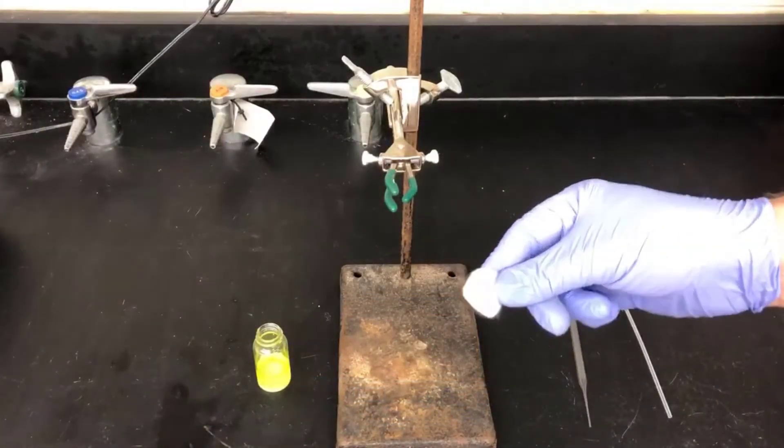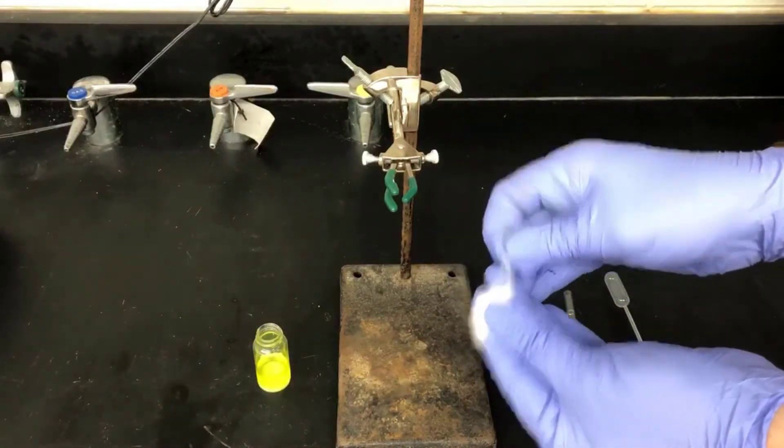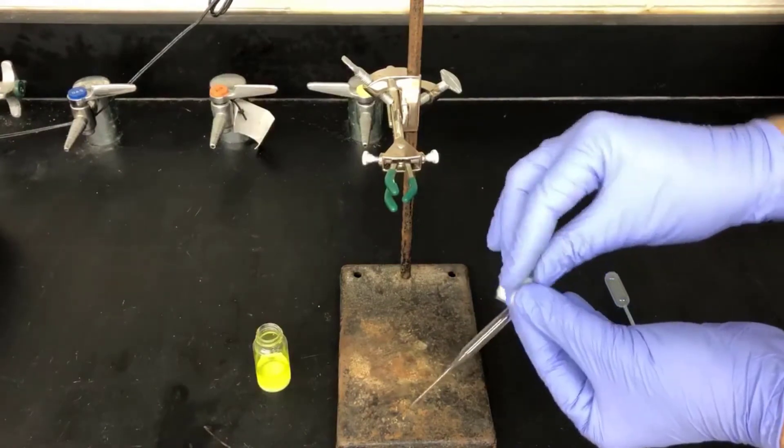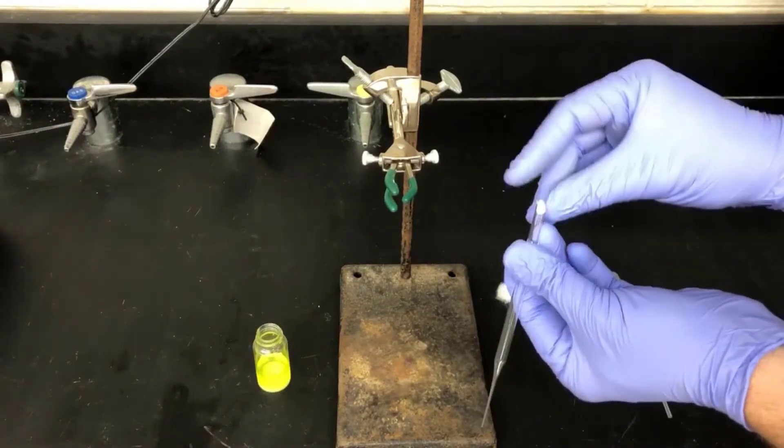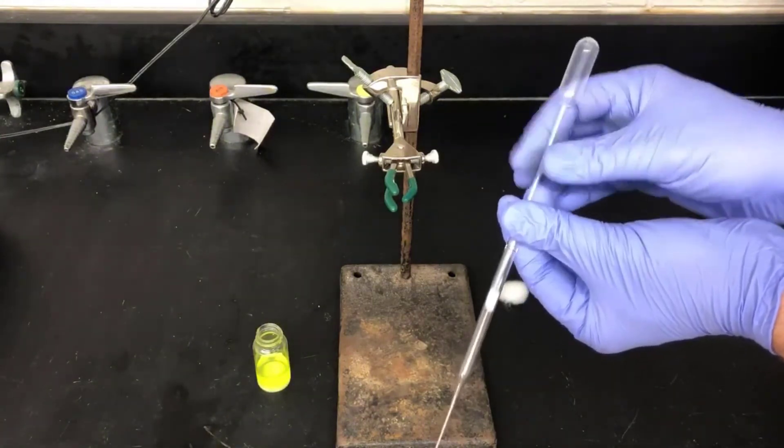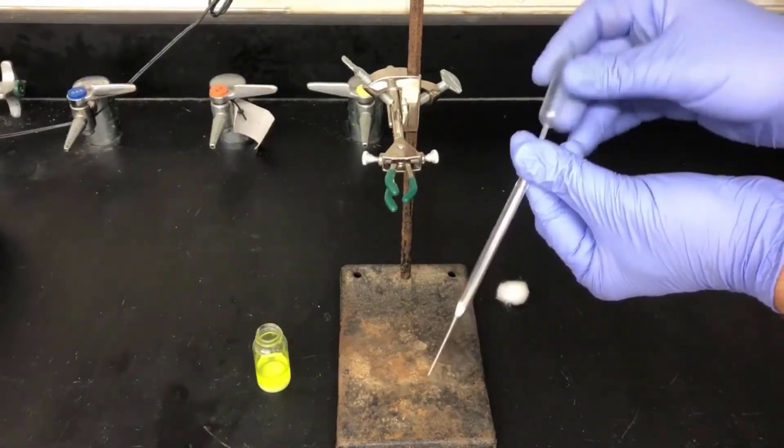Now I'll filter the citrus oil solution to remove the magnesium sulfate. I'm starting off with a tuft of cotton here from a standard cotton ball, and I will push that into the tip of a disposable glass pipette. This little tuft of cotton is going to serve as a filter to remove the solid magnesium sulfate particles from the solution.